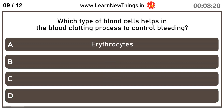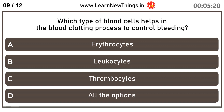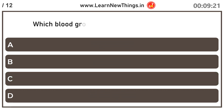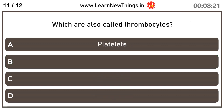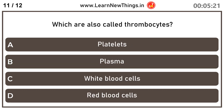Which type of blood cells helps in the blood clotting process to control bleeding? Thrombocyte. Also known as Platelets.